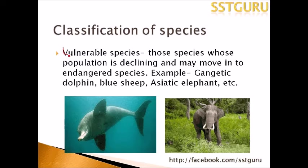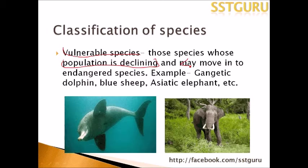Next comes the classification of Vulnerable Species. Vulnerable species are those whose population is fast declining and may move into the higher category of endangered species. Examples include the Gangetic dolphin, the blue sheep, and the Asiatic elephant. These animals fall under the vulnerable category.